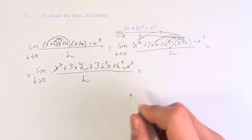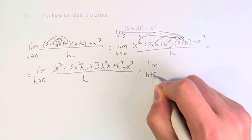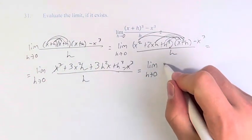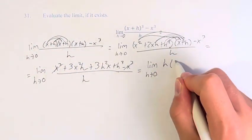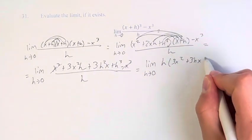x³ minus x³ cancels out and so we have the limit as h approaches 0. We can factor out an h from all of them so that leaves us with 3x² + 3hx + h².